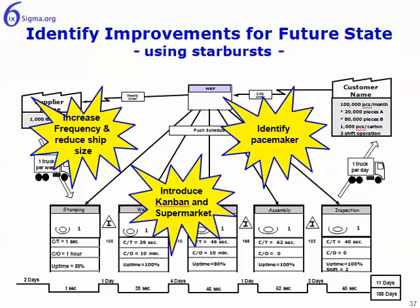The future state map — now that we have some mechanism to prioritize the opportunities, we want to be able to represent those on a future state map. We need to communicate to the leadership and management what the impact of initiative A, B, and C will have. We need to quantify those by making some assumptions around: if we go into a given area and conduct an improvement project of some kind, how much time can we remove out of the process? We can represent those on the future state map, and we do that with these starbursts.